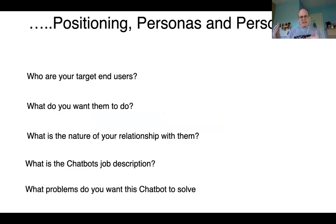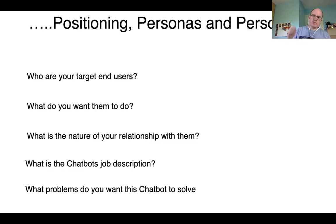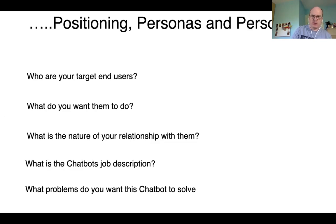For positioning and persona, there's a checklist of questions like: who are the target end users, what do they want to do, what's their relationship — are they customers, students? Can we write a job description for the chatbot? When you go through 10 to 20 of these questions and get good answers, it speeds up everything later. It also stops you building a chatbot that has no purpose — you can make the most accurate AI ever, but if there's no purpose, don't bother.